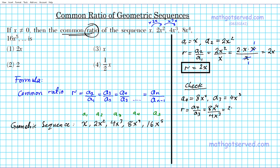Let's simplify: 8 divided by 4 is 2, and x to the fourth divided by x to the third is x. So we're left with 2x. That's exactly what we got before — 2x is confirmed as the common ratio.